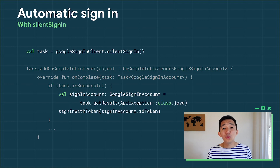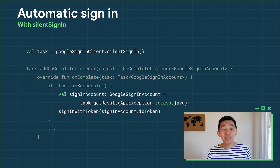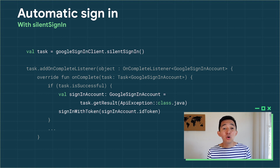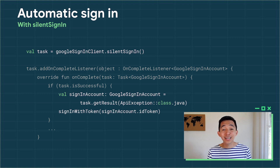Finally, with your app already granted permission to sign in with Google, you can automatically sign the user in using Google Sign-In's Silent Sign-In API on Android TV. You'll call Silent Sign-In from your Google Sign-In client. If successful, it'll return a Google Sign-In account, and you can use the Google ID token to sign the user in.